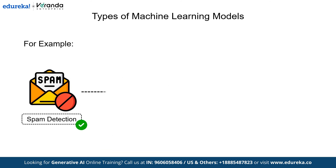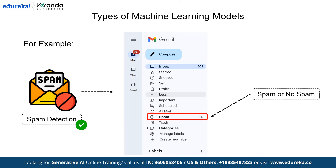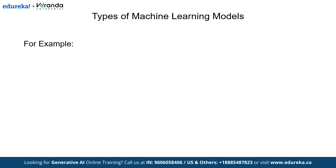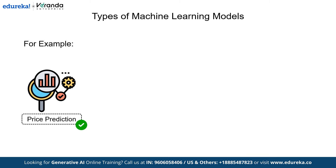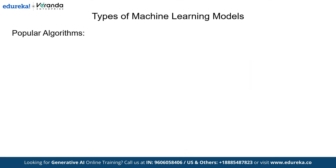Email services like Gmail use supervised learning to classify emails as spam or not spam, by learning from past labeled examples. Another example is price prediction — real estate platforms use regression models to predict house prices based on features like location, size, and amenities. Now let's look at some popular algorithms.